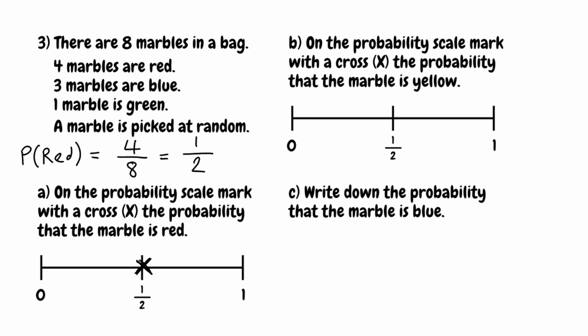For part B, we want to mark with a cross the probability that the marble is yellow. Looking back at the question, the bag only contains red, blue, and green marbles. There's no chance of picking a yellow marble, so it's impossible. Therefore the probability is zero, and that goes right at the front of our scale.